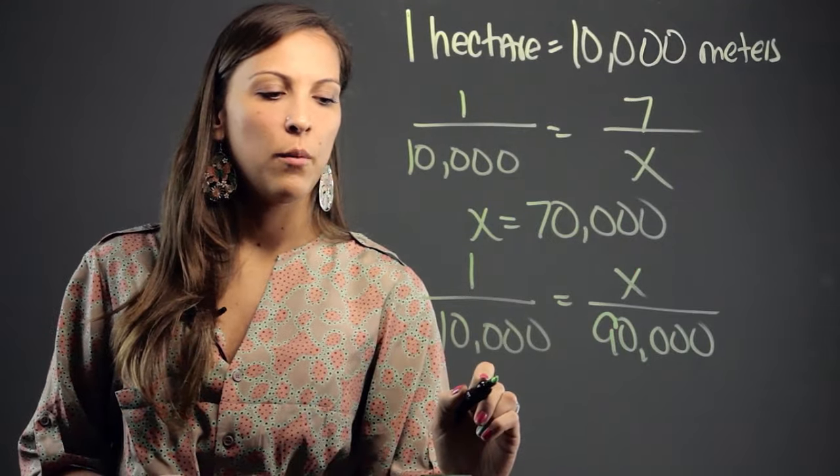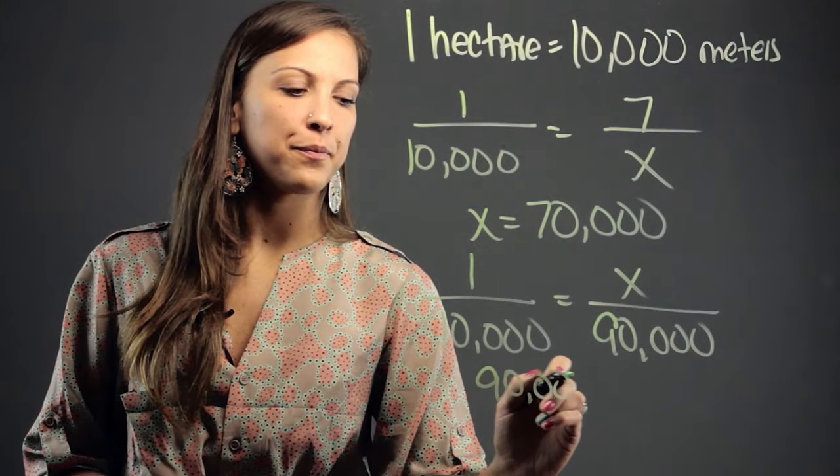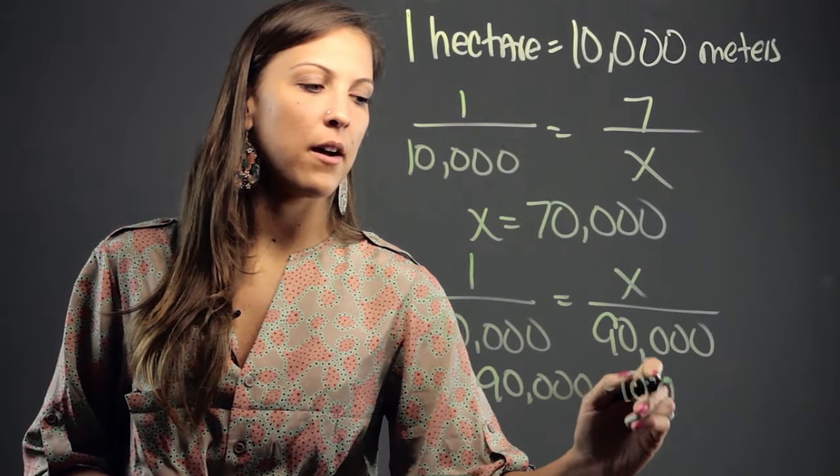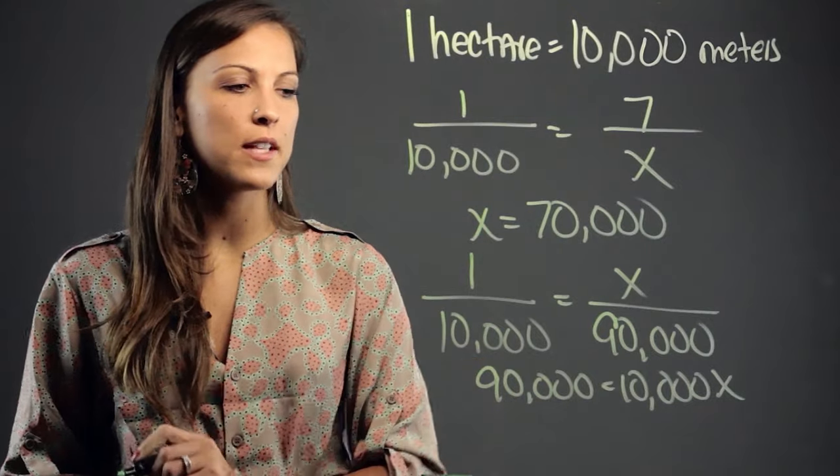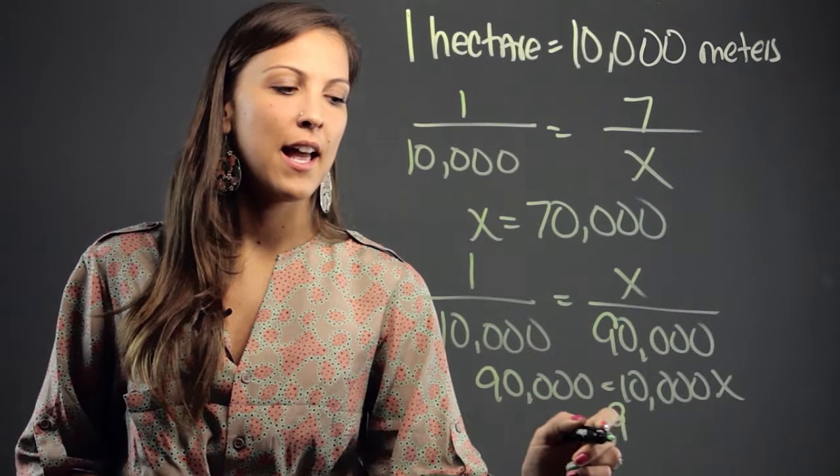So again, we're going to solve the proportion. We get 90,000 equals 10,000 times x, and when we divide on both sides, we get x equals 9.